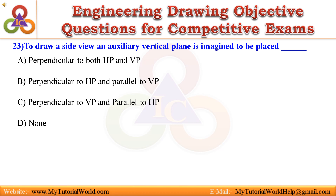Question 23. To draw a side view, an auxiliary vertical plane is imagined to be placed: A. Perpendicular to both HP and VP, B. Perpendicular to HP and parallel to VP, C. Perpendicular to VP and parallel to HP, D. None. Answer is Perpendicular to both HP and VP.